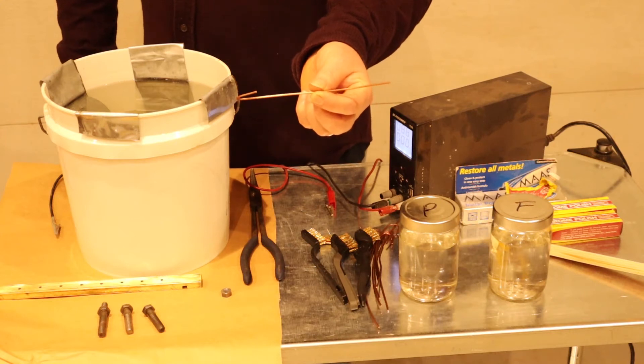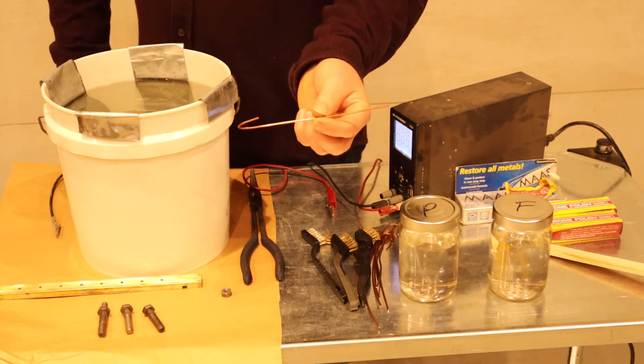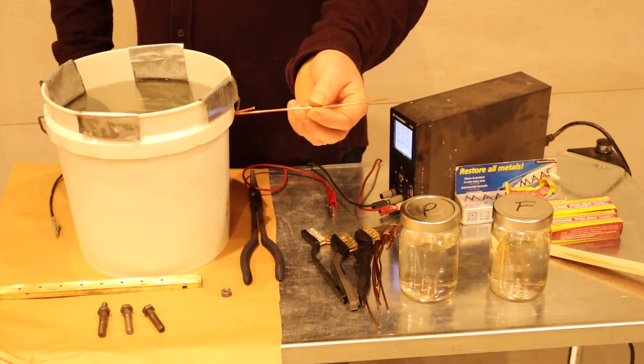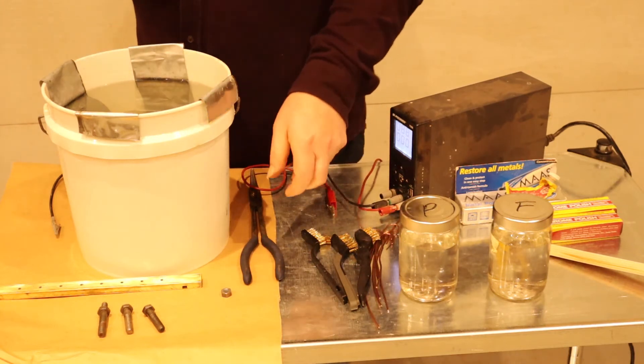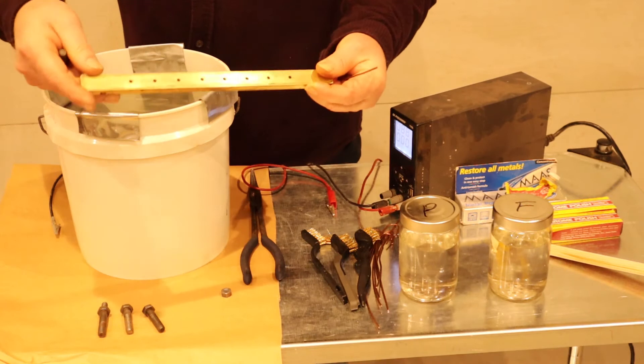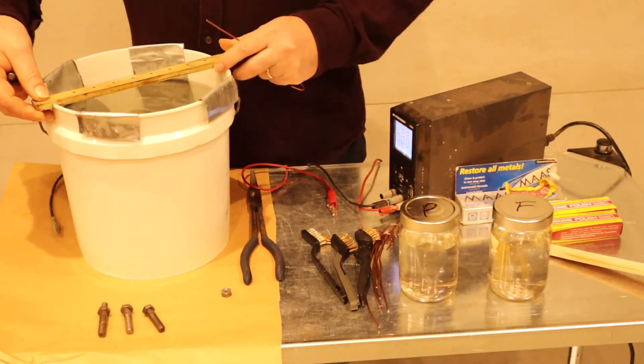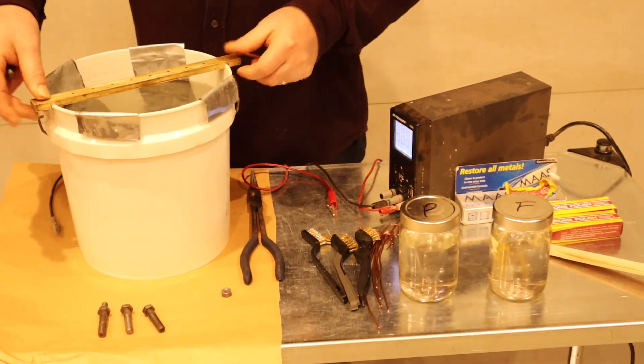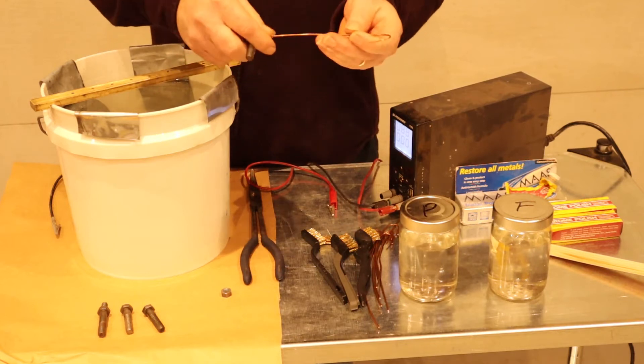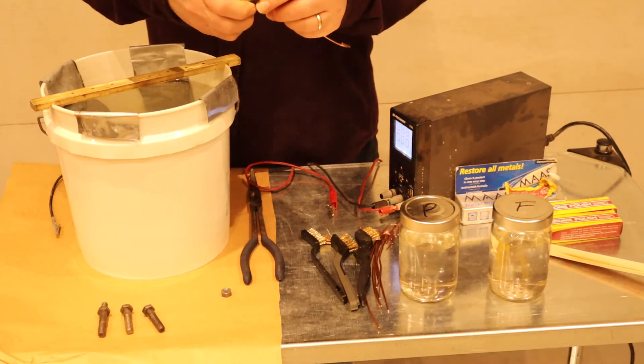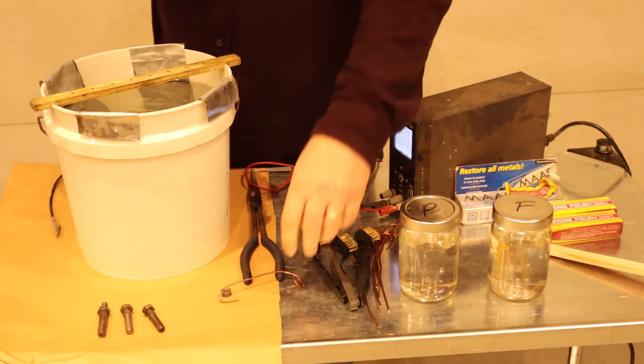I've bought a bunch of 12 gauge electrical ground wire that you can buy at your box stores for like pennies a foot, and it makes a great hanger for your bolts. We also have a brass bar with holes in it that we'll put into the top of our tank, and that's what we'll actually hang the parts from.